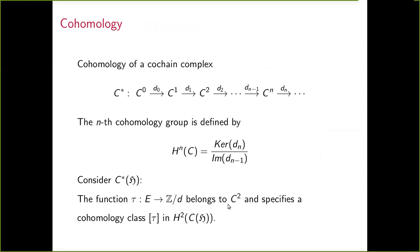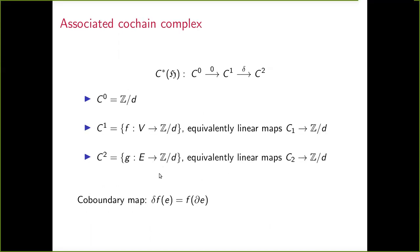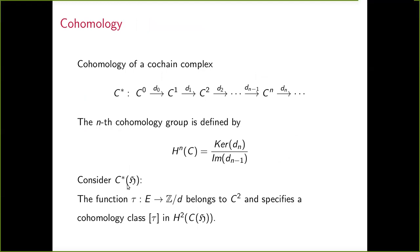For any chain complex there's a dual concept — the cochain complex. The 0-cochains are again one-dimensional, and the 1-cochains and 2-cochains are functions on V and E, thought of as a Z/dZ-module. The coboundary map is defined using the boundary map: if f is a 1-cochain and you take its coboundary applied to an element e in E, you first take the boundary of e and then apply f. Since τ is a function on the set of edges, we can think of it as an element of C^2 and thus as a cohomology class in degree two of the cochain complex.